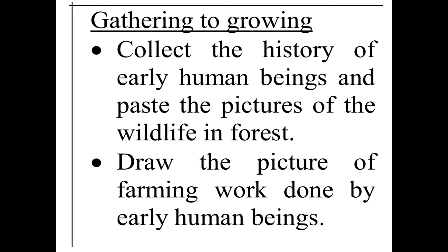Students, your activity topic is 'Gathering to Growing.' What you have to do in this activity is collect the history of early human beings, as we have already discussed in live class. If possible, get the picture or draw the picture, and if you have an old textbook you can cut it out and paste the picture. But your activity's main task is to write the history of early human beings — at least six points. You will get the history from the textbook and from Google as well.